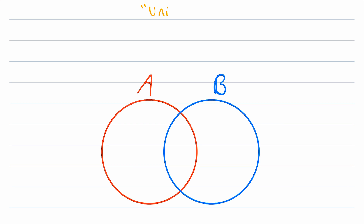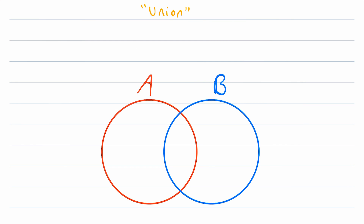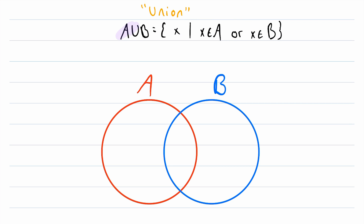For each operation, we'll begin with a quick definition using set builder notation. So what is the union of two sets, A union B? The union of two sets A and B is the set containing all elements that are in A or B. Remember that OR means the element can be in just A, in just B, or in both A and B. That's what the union is.